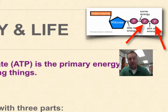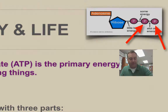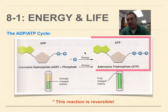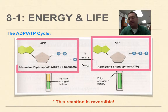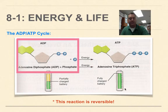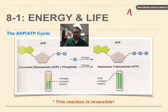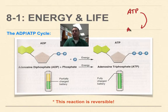Your body is constantly running an ATP-ADP cycle. If you look at this picture, you'll see ATP represented as a fully charged battery, while ADP is a half-charged battery. The difference is that ADP is missing the outer phosphate. This is a reversible reaction — ATP releases energy and forms ADP plus a phosphate.